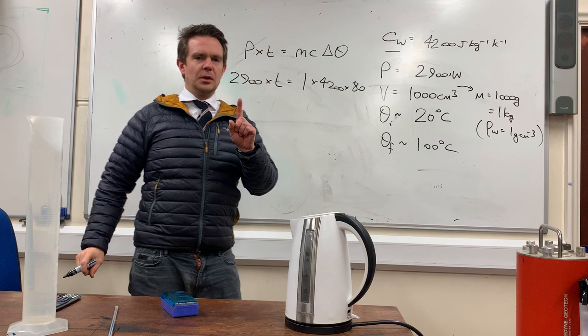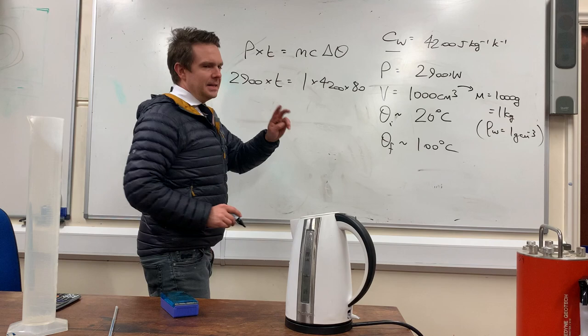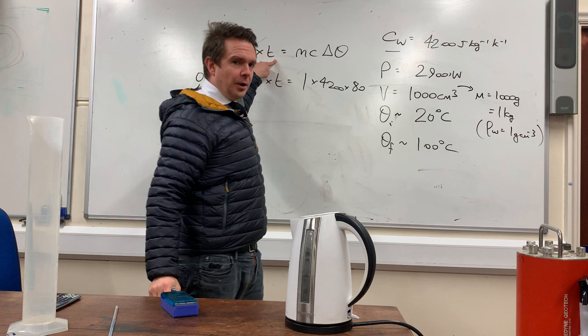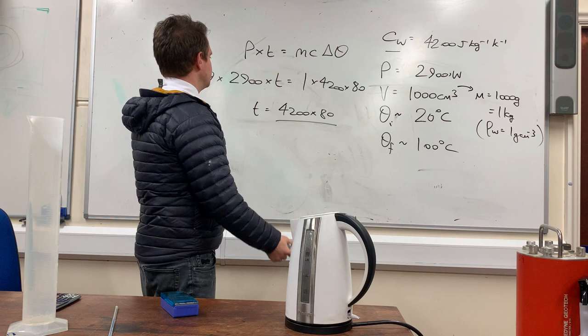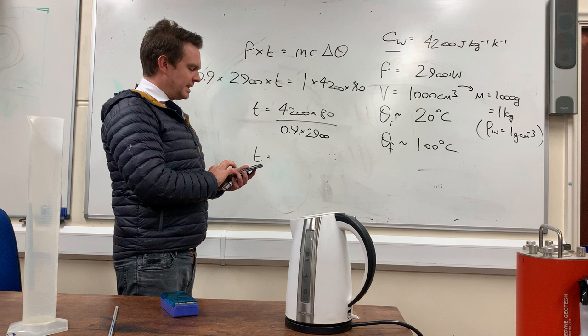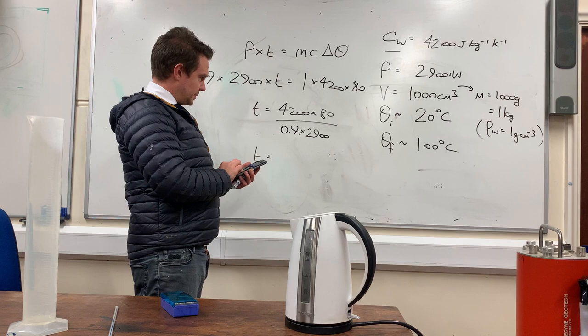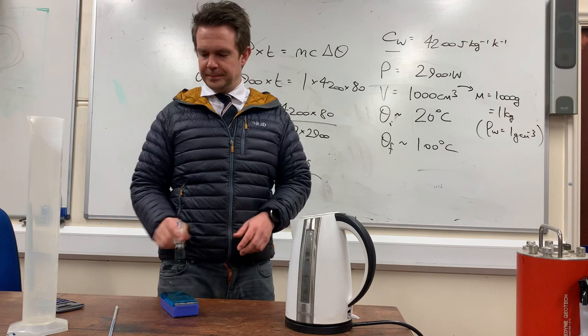Now, the kettle will not be 100% efficient — think about why that is. Let's say it's 90% efficient, which means I need to put a 0.9 here because only 0.9 of the energy input is going to actually go into the water. If you work out the time we expect the boiling to take, 0.9 times 2,900 gives us roughly 130 seconds. So that's assuming 90% efficiency.